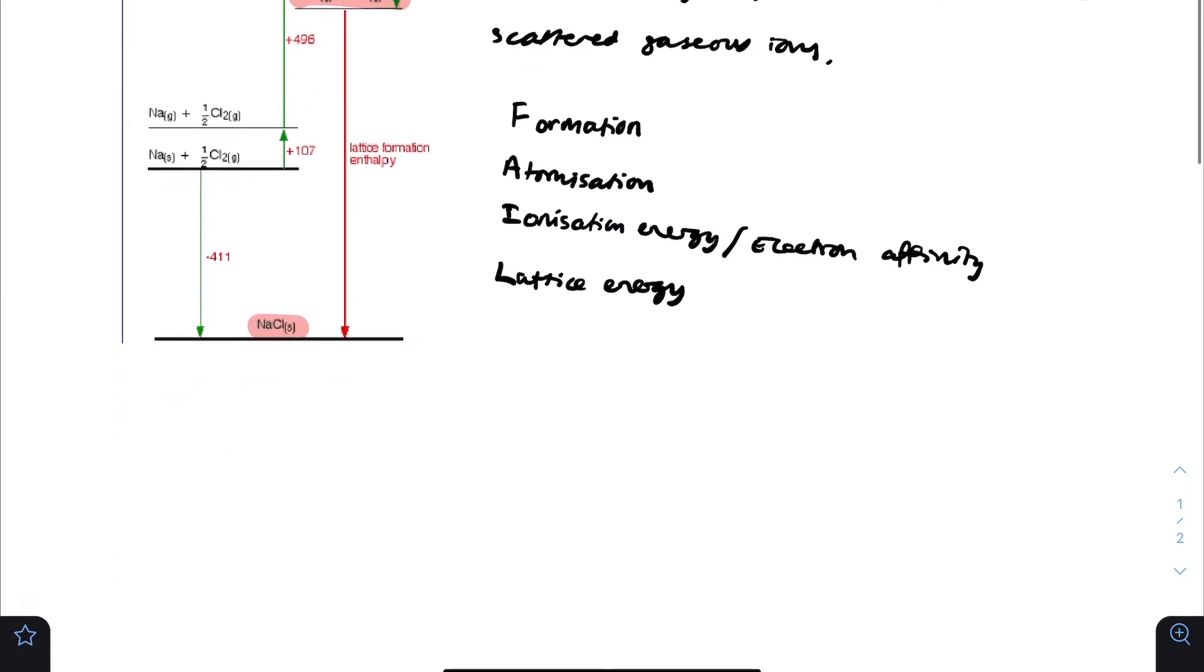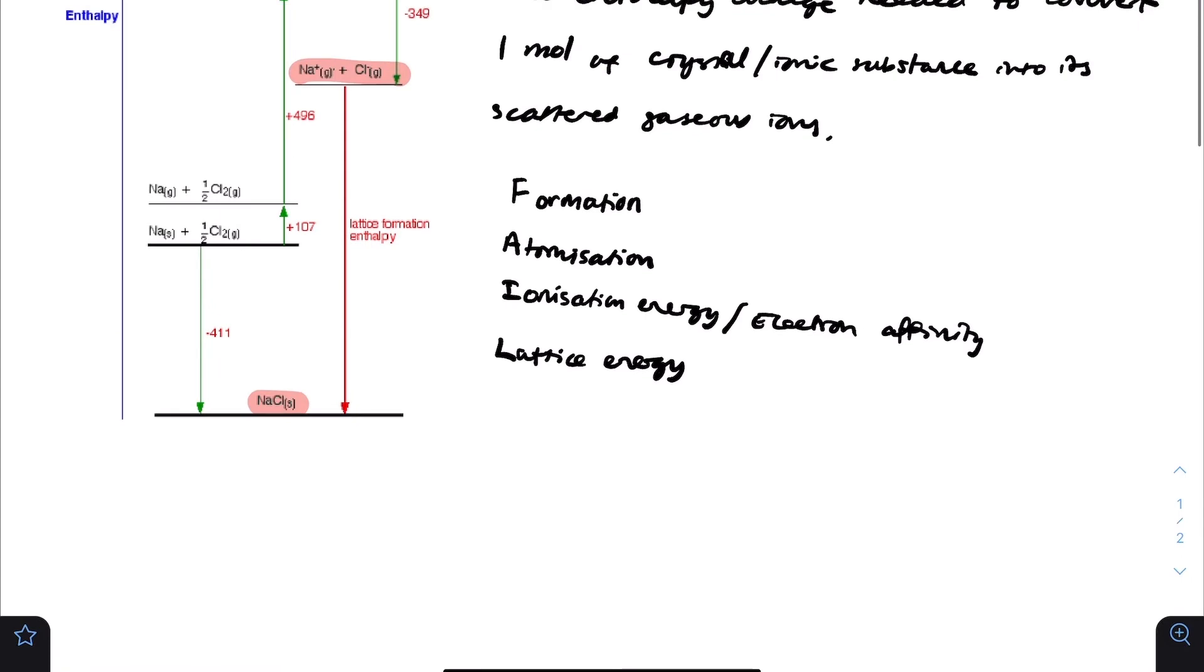Another thing to consider is the direction of these arrows when drawing the diagram. Formation is to the right, atomization is down, ionization is to the right, lattice is down. Right down, right down is how I remember it.